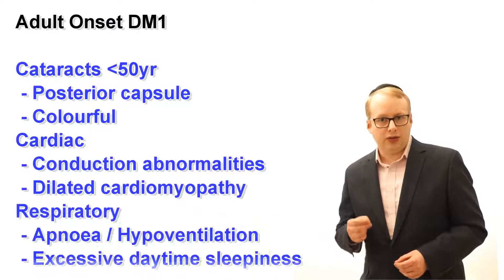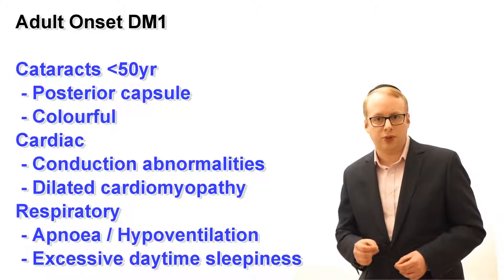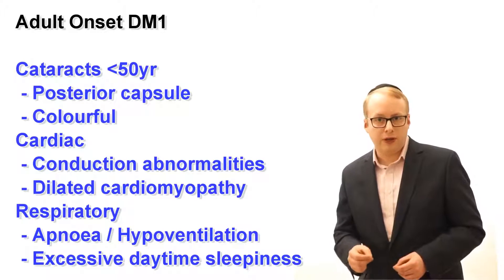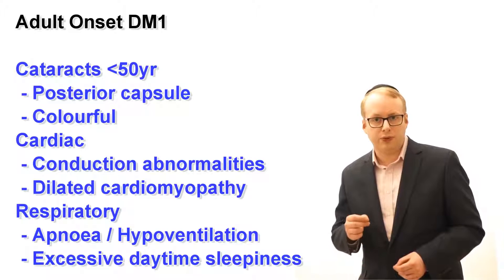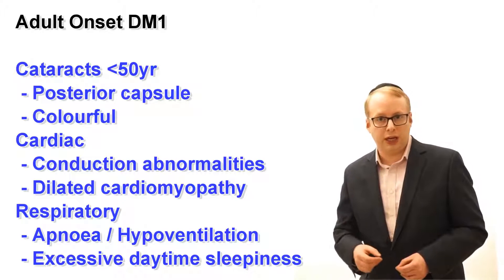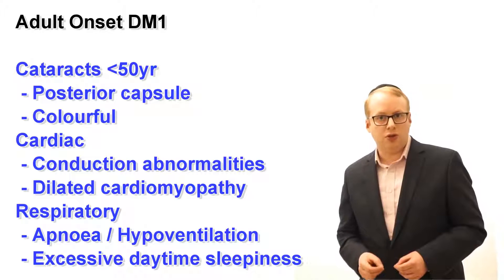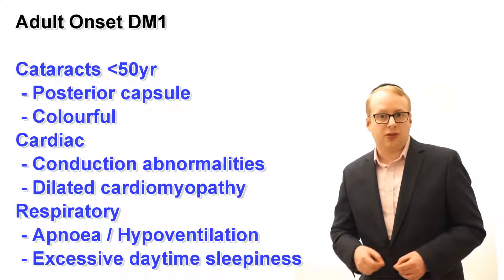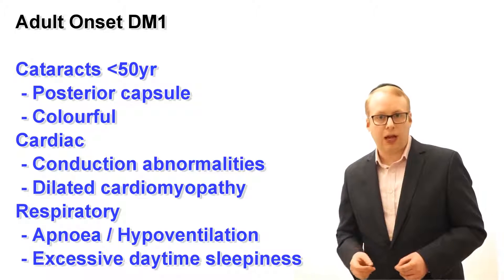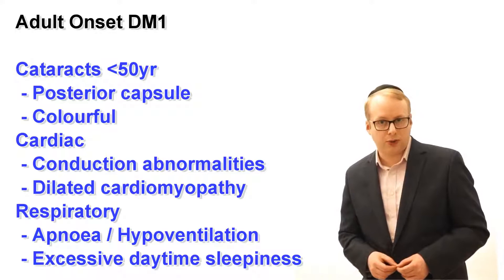Early onset cataracts are a characteristic feature, occurring in the posterior capsule, are very colourful, and often precede many years before muscle symptoms begin. Cardiac conduction abnormalities are common, as well as excessive sleepiness, apneas and reduced drive to the respiratory muscles.